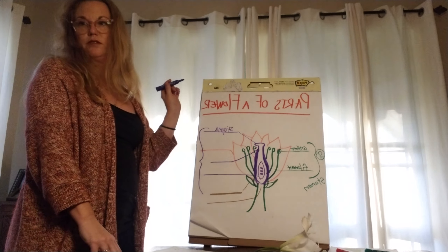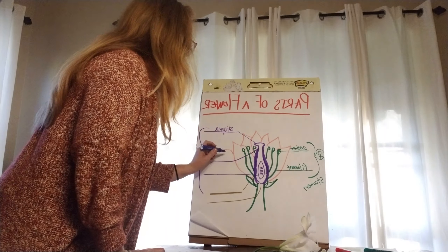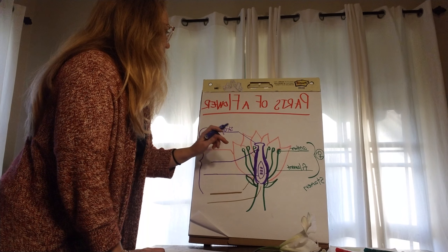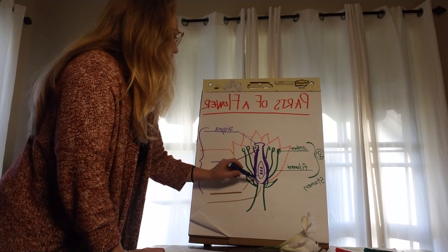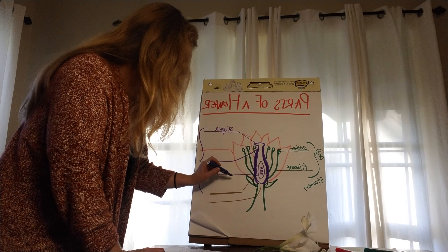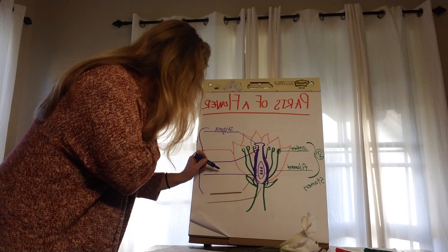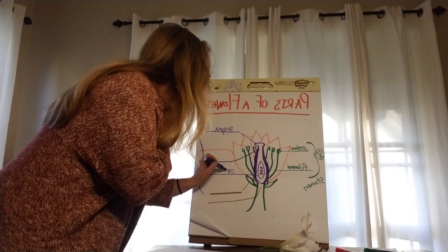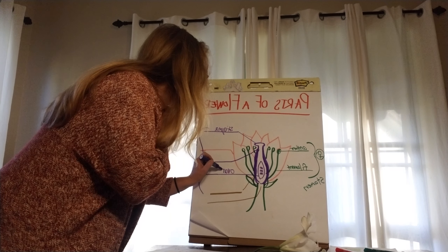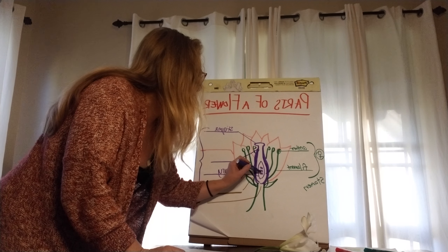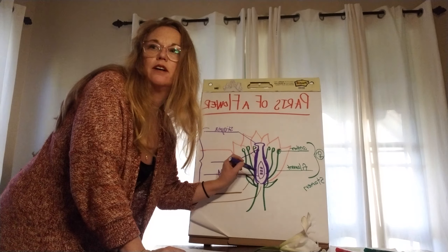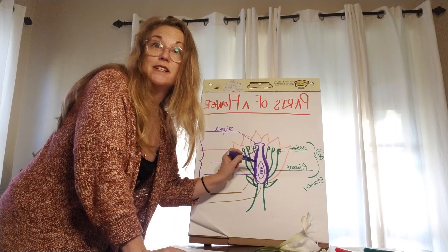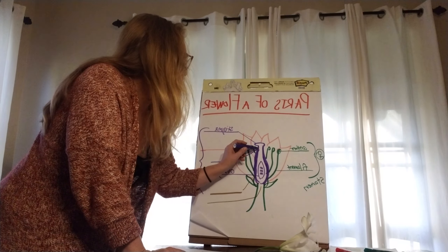And what's this part right here? That's the petal? No — it's the ovary. This right here is the ovary. And what do these look like inside the ovary? Those are seeds — those are the beginning of seeds, right.